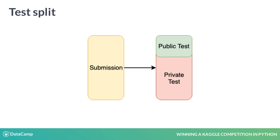This split is unknown and it is the same for all the participants. During the competition, we can see the results and standings on the public test data. The private test data is only used to determine the final standings at the end of the competition.